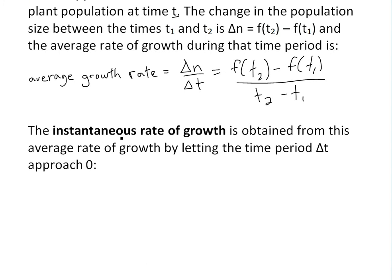If we were to find the instantaneous rate of growth, this is obtained from the average growth rate by letting the time period Δt approach zero. In other words, we find the limit. So then the growth rate, and this will refer to instantaneous growth rate, equals the limit as Δt approaches zero of Δn over Δt. This is just the definition of derivative, which equals dn/dt. This is the derivative and it's the instantaneous rate of growth.